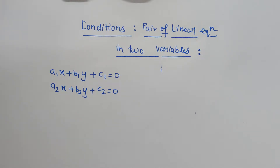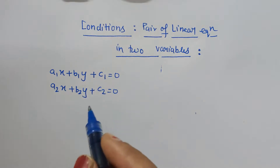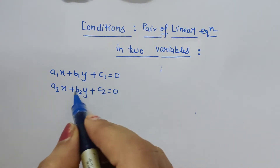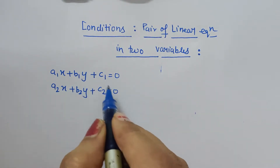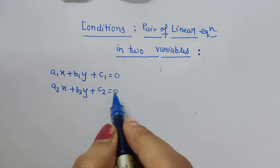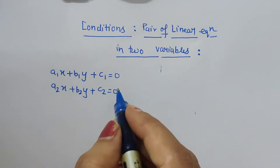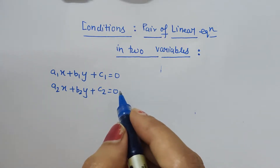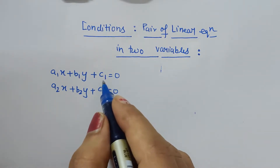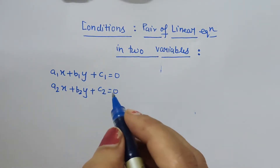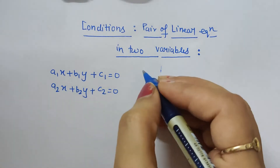As we can see, these are two standard forms of linear equations in two variables. The types of solution we may get for any pair of equations — the first one is unique solution.